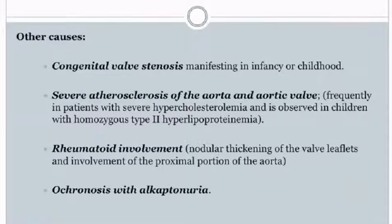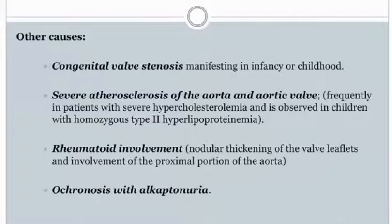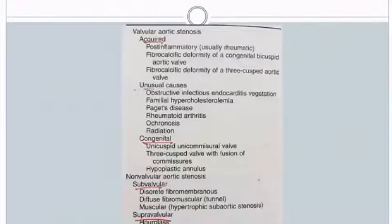Other causes include congenital valve stenosis, severe atherosclerosis of the aorta and aortic valve — frequently seen in patients with severe hypercholesterolemia and in children with homozygous type 2 hyperlipoproteinemia — and rheumatoid involvement. In rheumatoid arthritis, there is nodular thickening of valve leaflets and involvement of the proximal aorta. Additional causes include ochronosis with alkaptonuria. A table summarizes various causes of valvular, supravalvular, and subvalvular stenosis.